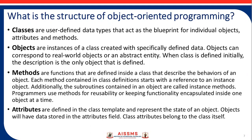When a class is defined initially, the description is the only object that is defined. Methods are the functions defined inside a class that describe the behavior of an object. Attributes are defined in the class template and represent the state of an object. Objects will have data stored in the attribute field, and class attributes belong to the class itself.